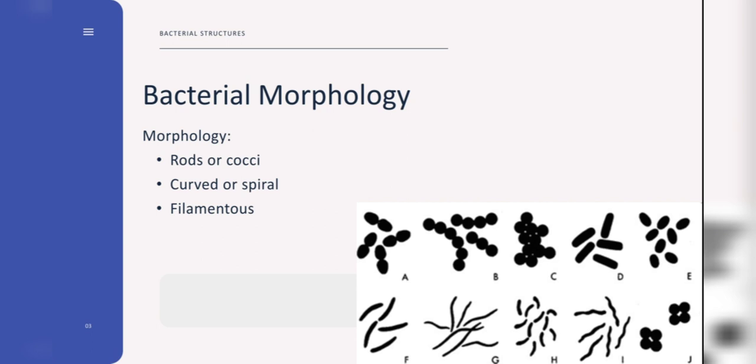Filamentous are very long, thin filament-shaped bacteria. Some of them form branching filaments, resulting in a network of filaments called the mycelium.